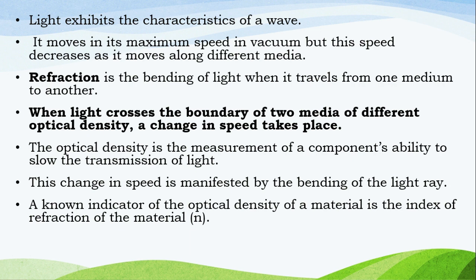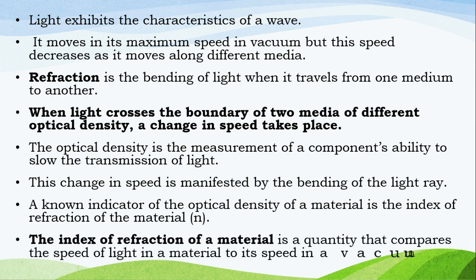This change in speed is manifested by bending the light ray. A known indicator of the optical density of a material is the index of refraction of the material. Pinapakita ng ilaw ang mga katangihan ng isang alon. Gumagalaw ito sa maximum na bilis nito sa vacuum, ngunit ang bilis na ito ay nababawasan habang gumagalaw ito sa iba't-ibang media. Refraction ay ang pagbend ng ilaw kapag naglalakbay ito mula sa isang daluyan patungo sa isa pa. Kapag ang ilaw ay tumatawid sa hangganan ng dalawang media ng magkakaibang optical density, magaganap ang isang pagbabago sa bilis. Ang optical density ay ang pagsukat ng kakayahan ng isang sangkap na pabagalin ang paghahatid ng ilaw. Ang pagbabago sa bilis na ito ay pinapakita ng baluktot na sinag. Ang index of refraction of a material ay dami na naghahambing sa bilis ng ilaw sa isang material nito sa isang vacuum.